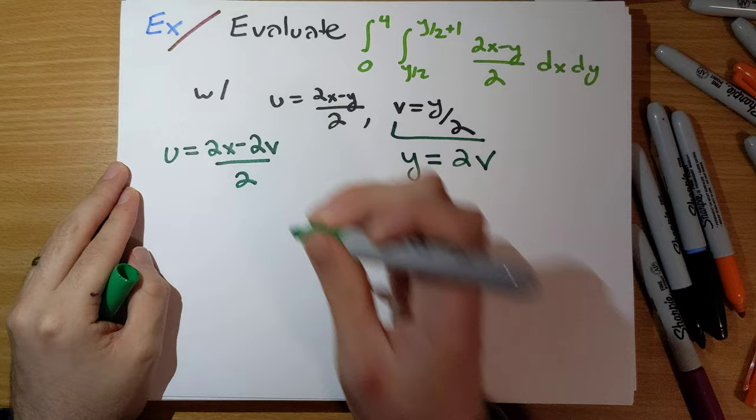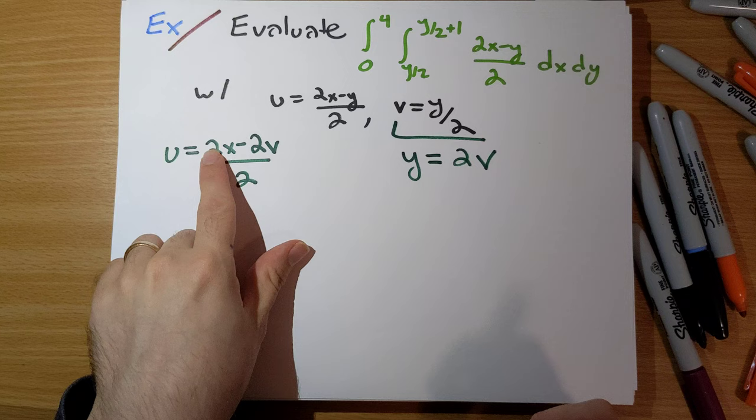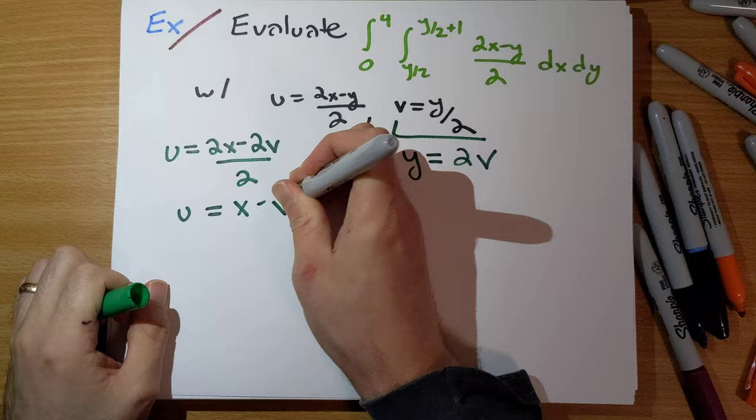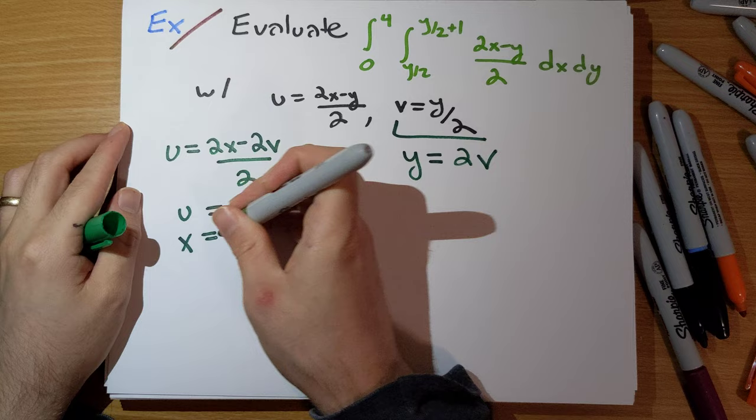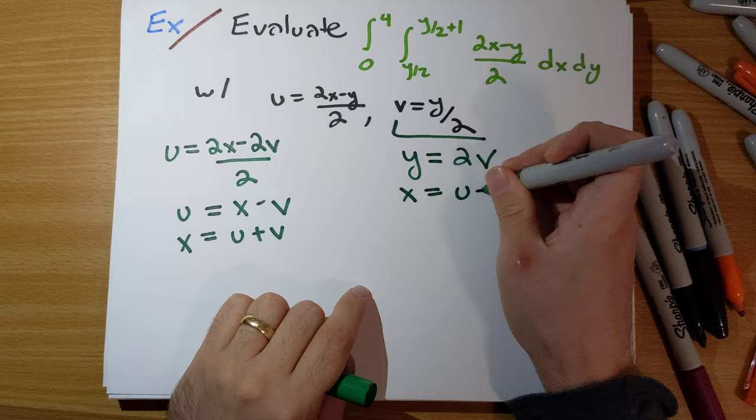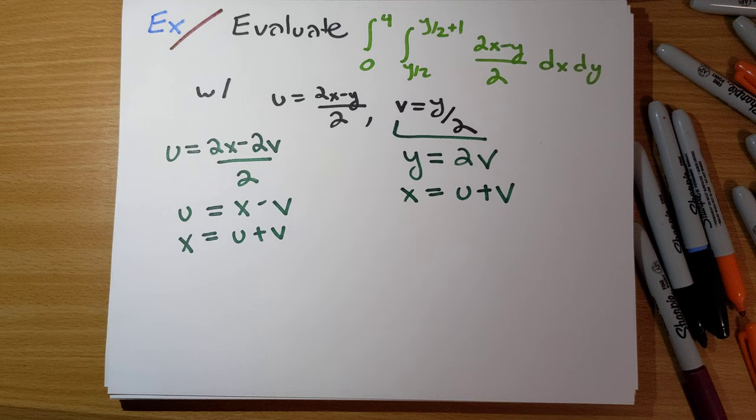We can divide, there's a 2x minus 2v over 2. That's just going to be u is equal to x minus v. And we can move the v to the other side to get x is equal to u plus v. So y is equal to 2v, x is equal to u plus v here. We have our change of variables all ready to go.